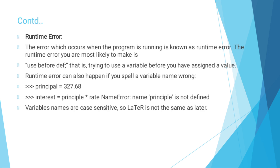The next one is runtime error. The error which occurs when the program is running is known as a runtime error. The runtime error you are most likely to make is 'use before def', that is trying to use a variable before you have assigned a value. Runtime errors can also happen if you spell a variable name wrong. For example, if you declare 'principle = 327.68' but then write 'interest = principle * rate', you get a NameError because 'principle' is not defined — variable names are case sensitive.